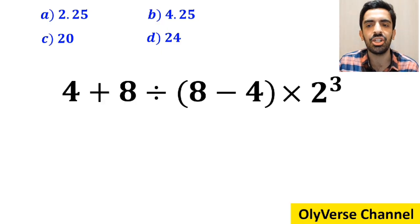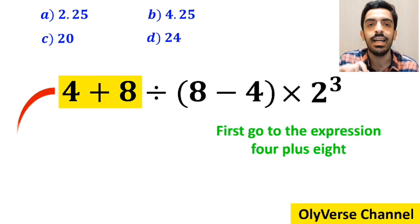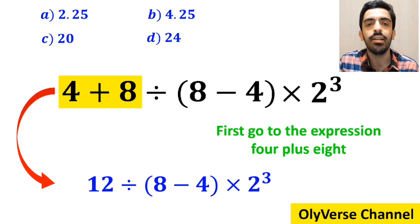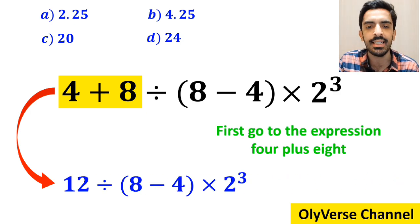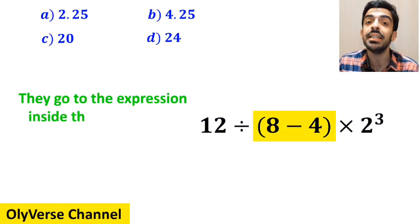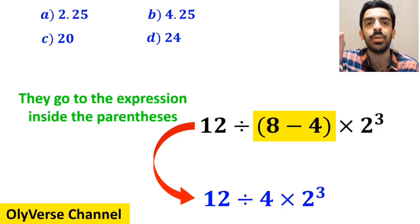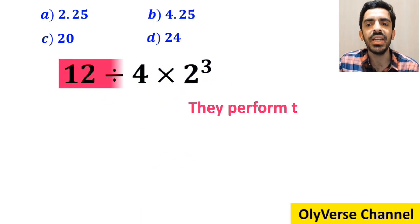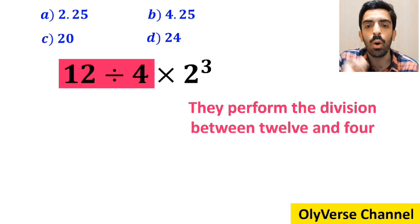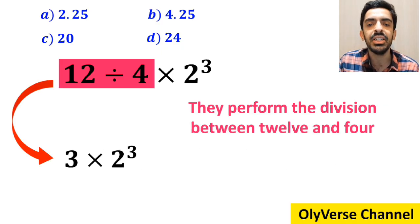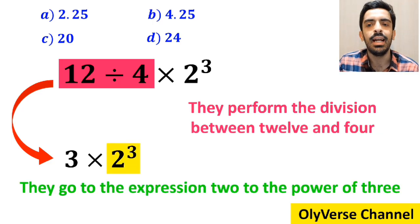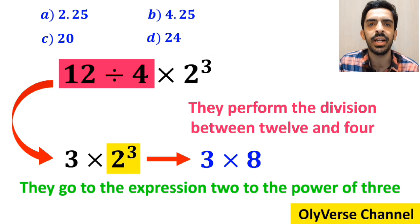Many people, to solve this question, first go to the expression 4 plus 8, and instead write 12 divided by 8 minus 4 in parenthesis, then times 2 to the power of 3. In the next step, they simplify the parenthesis to get 12 divided by 4, times 2 to the power of 3. They then perform the division between 12 and 4, writing 3 times 2 to the power of 3. Finally, they simplify 2 to the power of 3 to get 3 multiplied by 8, which gives them the answer 24.